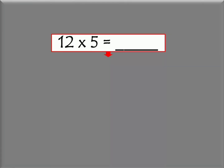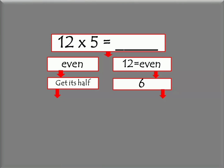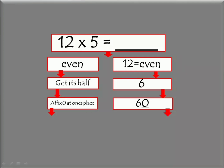Let's try to answer the given example. What is the product of 12 and 5? First step: 12 is an even number. Second step: get half of 12 — of course we have 6. Lastly, since 12 is an even number, we affix 0 at the ones place. So from 6, it will now become 60. Therefore, the product of 12 and 5 is 60.